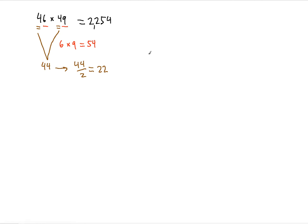The second example in which this trick will work is 47 multiplied by 48. Once again, take 7 and 8, multiply it, and you get 56. Then take 4 and 4, divide it by 2, and you get 22. That result goes here, so the answer is 2256.